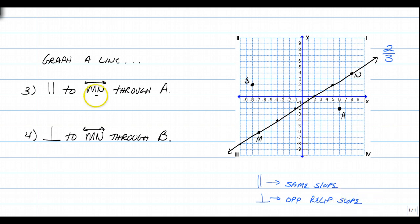A slope that's parallel to MN is going to have a slope of 2 thirds, the same slope. But a line that is perpendicular to MN is going to have an opposite reciprocal slope, so it's going to be negative 3 halves.